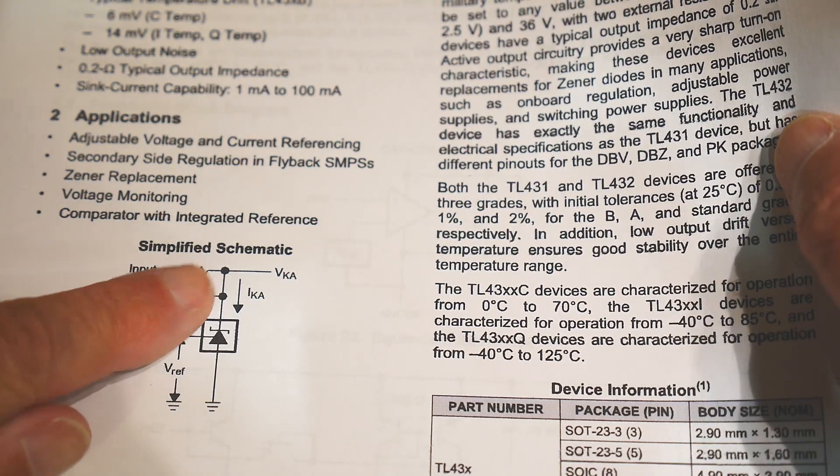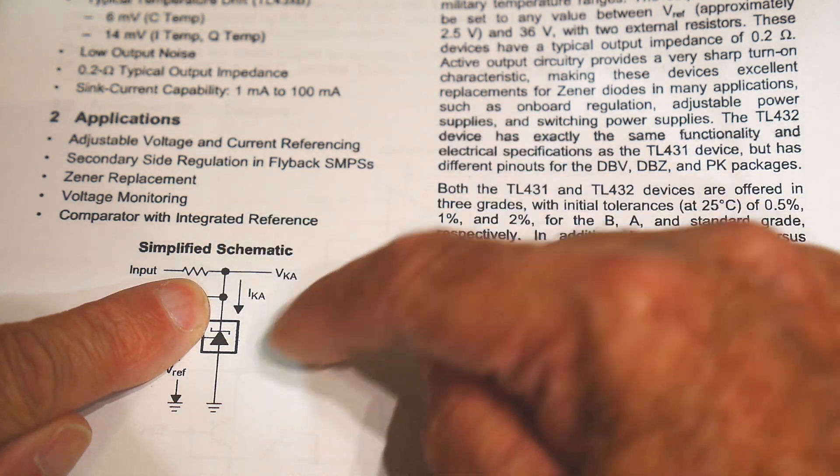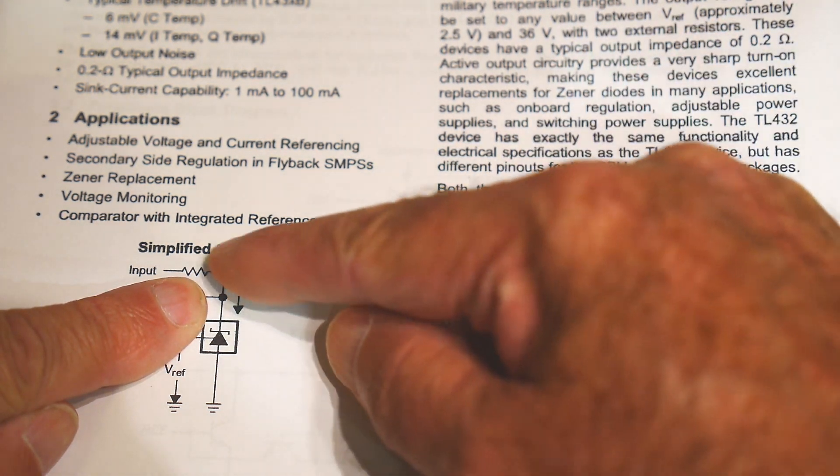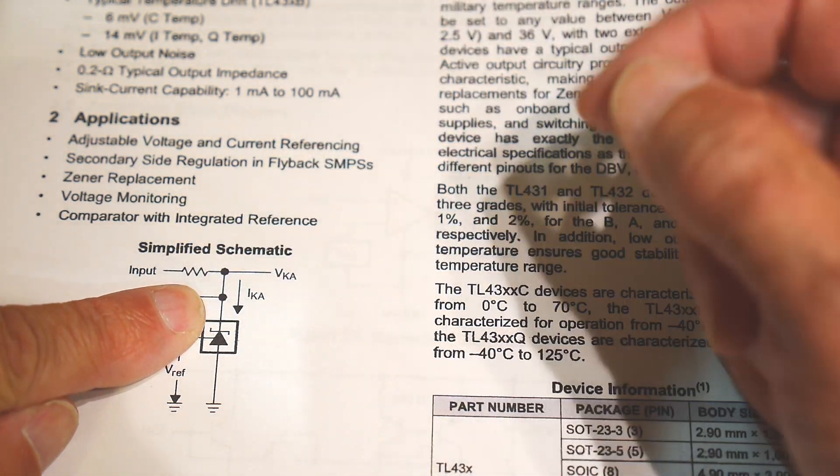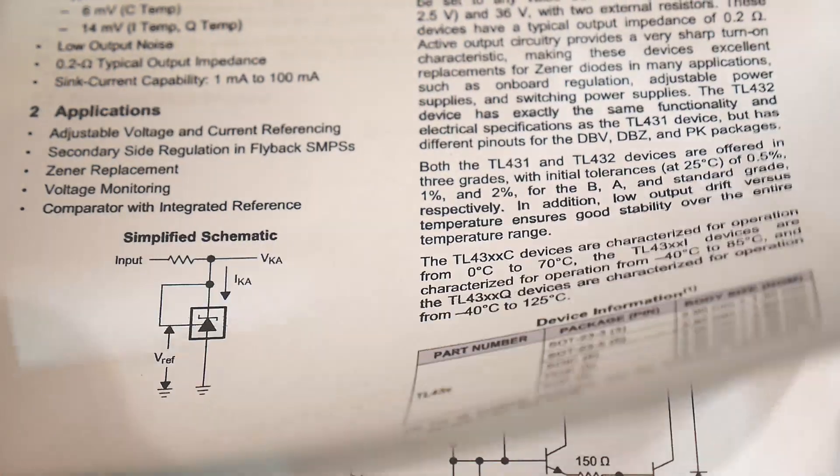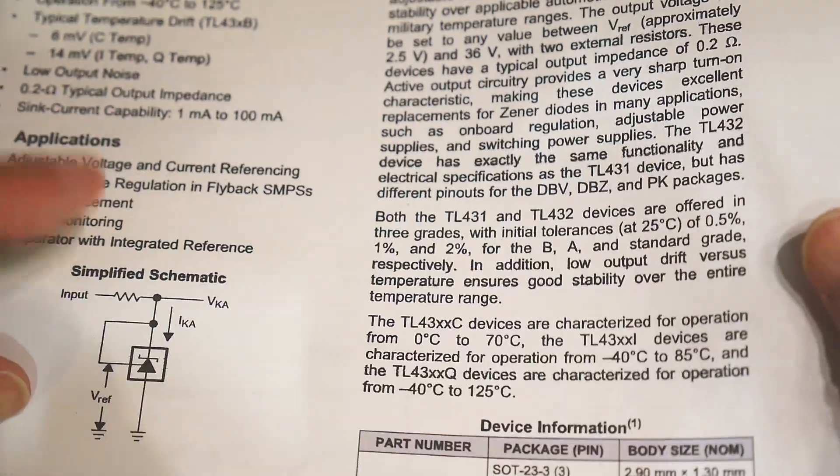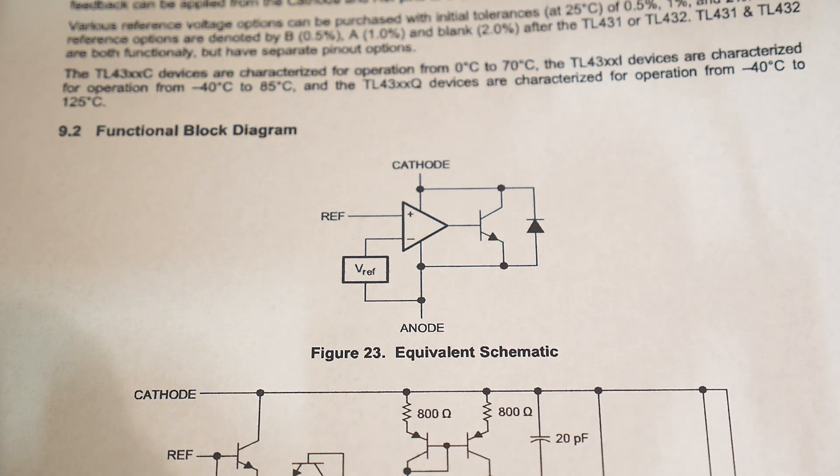And it's sort of designed to generate 2.5V. If you just ignore this line here, it looks just like a Zener diode. You have a resistor, and then the diode, and then the output. It looks just like a Zener diode except it has this extra wire. It's in a 3-terminal TO93 package.